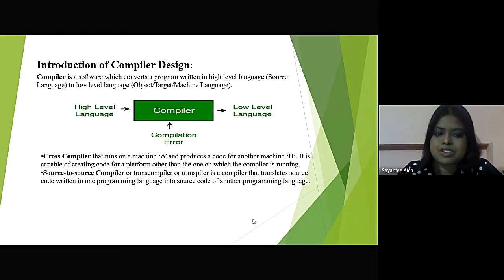There are mainly two types of compilers, cross-compiler and source-to-source compiler. A cross-compiler is the one that runs on a machine, suppose A, and produces a code for another machine, suppose B. Now machine A is capable of creating code for a platform other than the one in which the compiler is running.